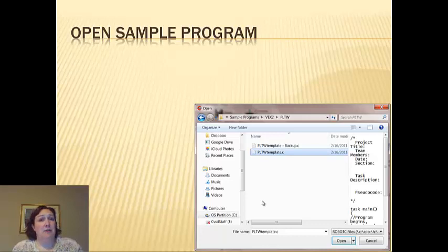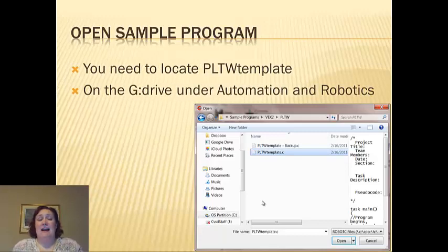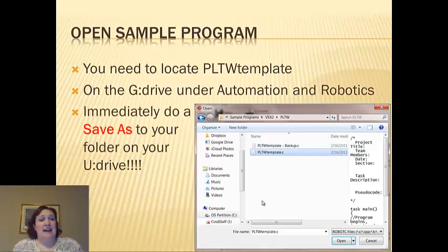I always open a sample program to start from because it gives me a place to go. In our case, we're going to be using the PLTW template. For my students, I put it on my G drive. It's under Automation Robotics. And then as soon as you open it, it's a template. You can't save it back to that same place. You need to go save as, change the name of it, call it Robot Car, or Spinning Sign, or Bridge, or whatever you're going to name. In this case, I would call it Testbed. And I would do a save as and put it onto my drive with my files and my data.